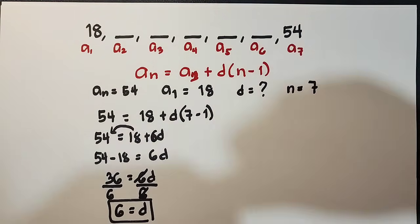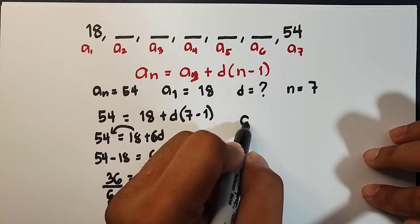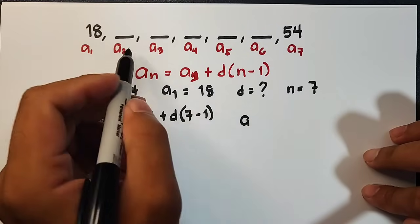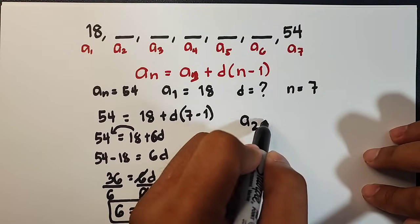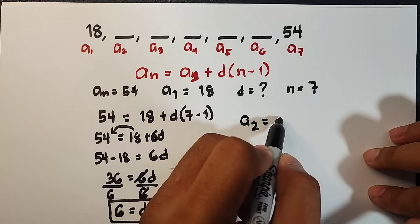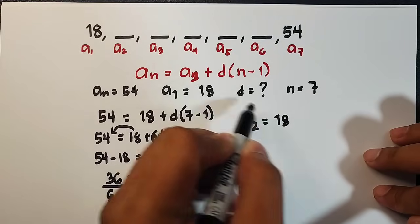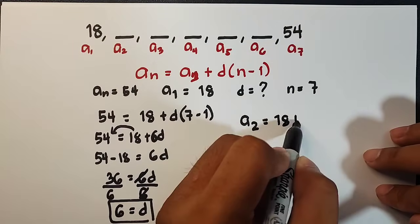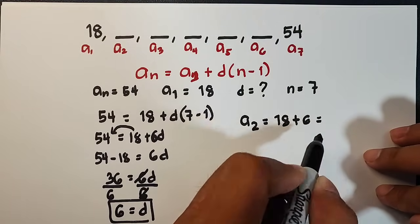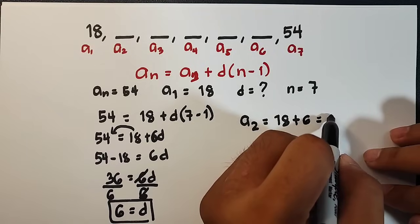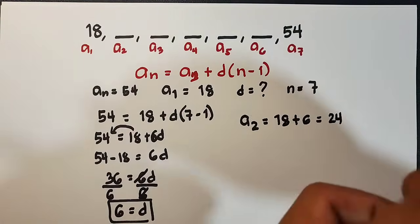To find the a sub 2, all you need to do is to add a sub 1, which is 18, plus 6. And that is equal to 24. This is 24.